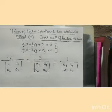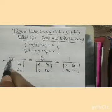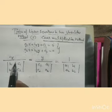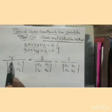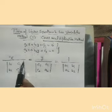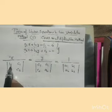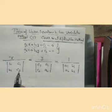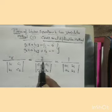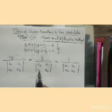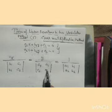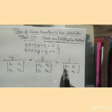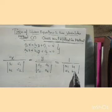Let us recapitulate. In cross multiplication method, write down x, y, 1. Below x, we write the coefficient of y: B1, C1 and the constant term. Below y, we write constant terms and the coefficient of x: A1, A2. Below 1, we write the coefficient of x and coefficient of y.